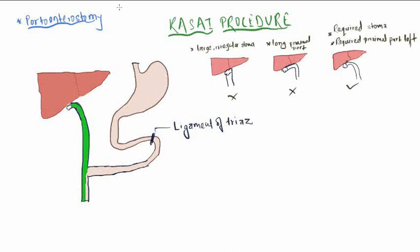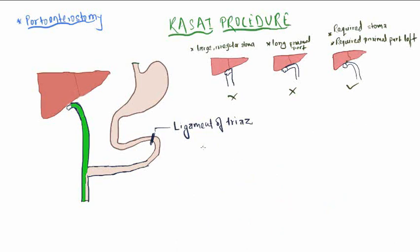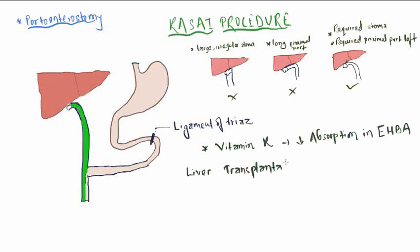We should give vitamin K in cases of extrahepatic biliary atresia because there is decreased absorption of vitamin K. We proceed to liver transplantation if the Kasai procedure fails or if there are complications of chronic liver disease.